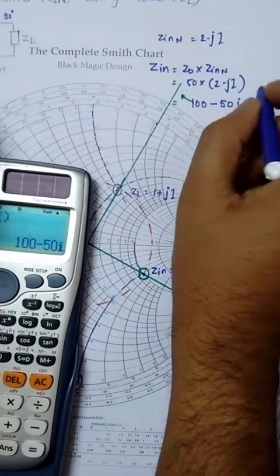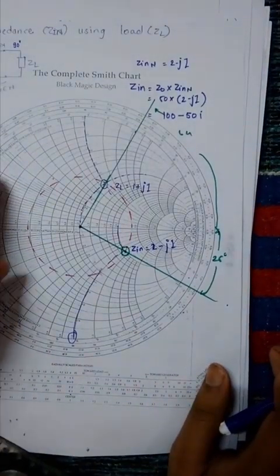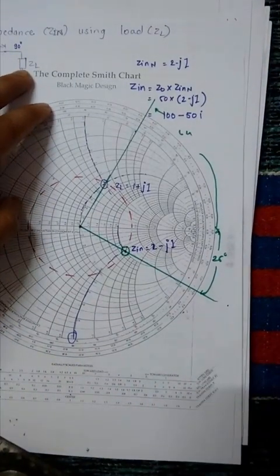This is the required Zin. So in this way you can calculate Zin using normalized impedance and load impedance. Thank you for watching. If you like my video, please subscribe to my channel for more updates. Thank you.